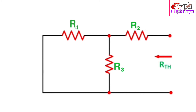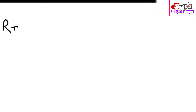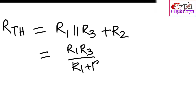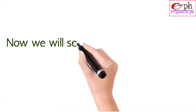Here we see that R1 and R3 are connected in parallel, and their equivalent resistance is connected in series with R2. So the equivalent resistance Rth equals R1 parallel with R3, plus R2. This gives Rth = (R1 × R3) / (R1 + R3) + R2.